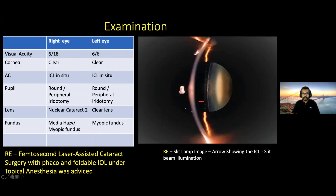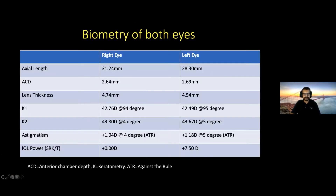The image shows the slit image of the ICL. For the right eye, femtosecond laser-assisted cataract surgery with phaco and foldable IOL under topical anesthesia was advised. Biometry of both eyes was taken: axial length of the right eye was 31.24 mm and the left eye was 28.3 mm. Anterior chamber depth was 2.64 and 2.69 respectively, lens thickness 4.74 mm right and 4.54 mm left. K1 and K2 readings were 42 and 43 diopters, with astigmatism of +1.04 diopters at 4 degrees against-the-rule in the right eye, and +1.18 diopters in the left. Using the SRK/T IOL formula, the IOL power was approximately plano (zero diopters).